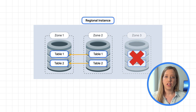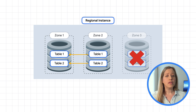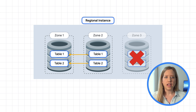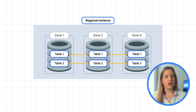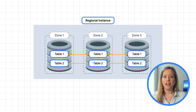If one zone becomes unavailable, Spanner automatically routes queries to the other zones. This all happens online, meaning in-flight queries won't fail and the database can continue to handle queries and updates. Once the zone comes back up, it will catch up from the other replicas automatically and resume handling traffic once it's current. No manual intervention is needed and there's never any downtime.